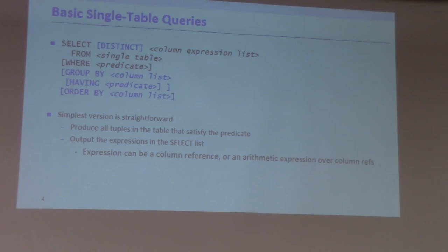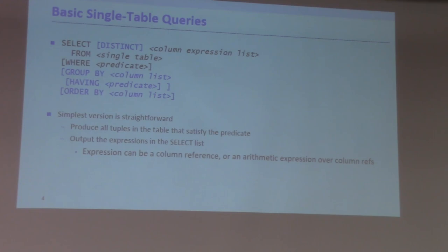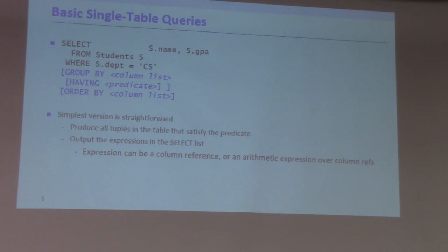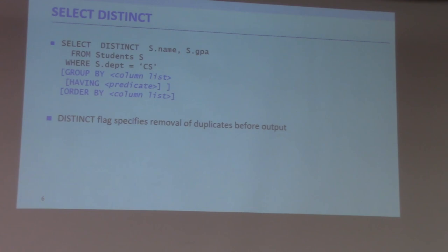The most basic single-table query is SELECT FROM a single table with a WHERE clause. But it can be as complicated as having all of those clauses. For example: SELECT DISTINCT student name and GPA FROM student WHERE department equals CS.